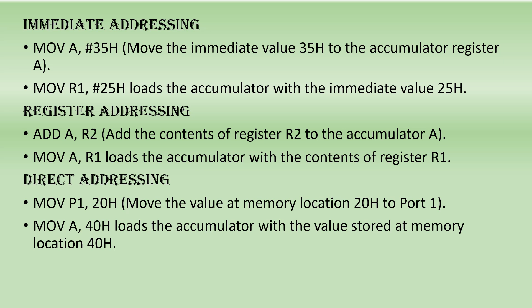Next is register addressing. In this mode the operand is the register itself. In immediate addressing the operand was a value; here in register addressing it is the register. The source and destination data must be present only in the registers R0 to R7. The operand is located in one of the general-purpose registers, and this mode is efficient for data already stored in a register.